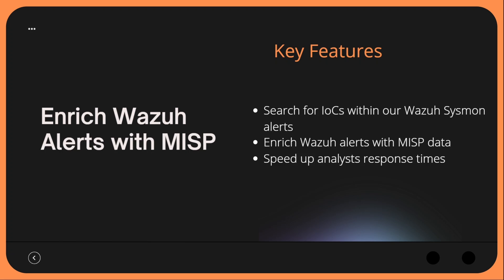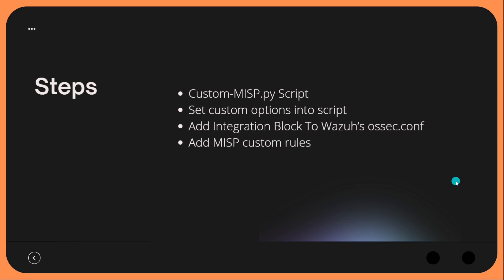We will use this API integration to enrich our Wazuh alerts with MISP data, which ultimately will speed up our analysis response time. Our analysts won't have to search through all of our alerts to try to pick out IOCs. With this automation in place, Wazuh will tell our analysts: hey, this alert has an IOC contained within it that is stored within MISP.